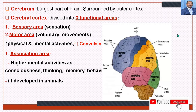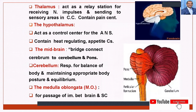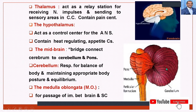The thalamus acts as a relay station for receiving impulses and sending them to the sensory areas of the brain, which contains the pain center. The hypothalamus acts as the control center over the autonomic nervous system and contains the pituitary gland. The midbrain is the bridge connecting the cerebrum to the cerebellum. Here you can see the hypothalamus as a small area in the brain.